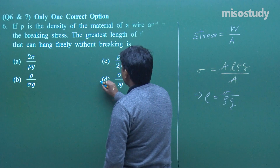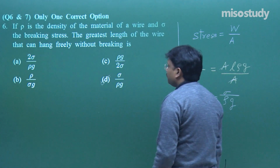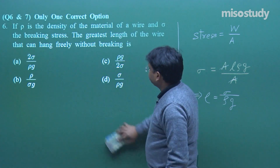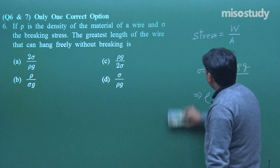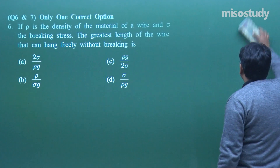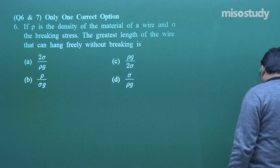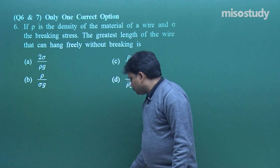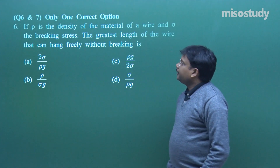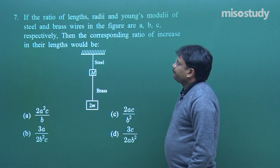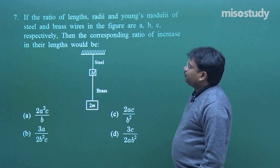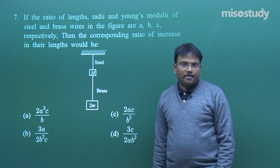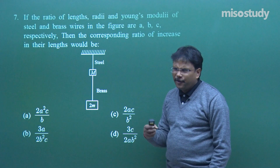So option D is the correct option giving me the answer of this particular question. Then comes question number 7. This question is slightly different - we have to think a bit. As such there is no difficulty, but we have to think differently.